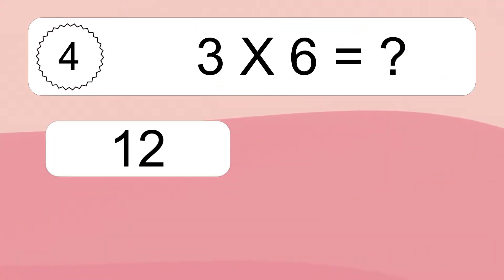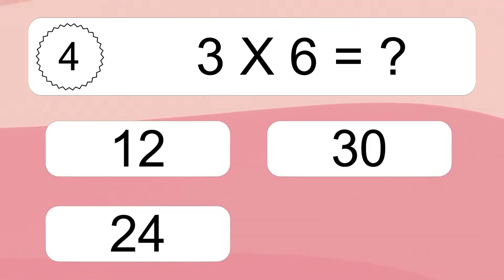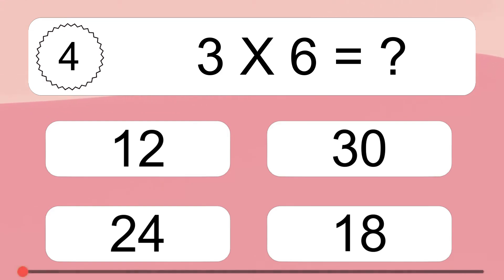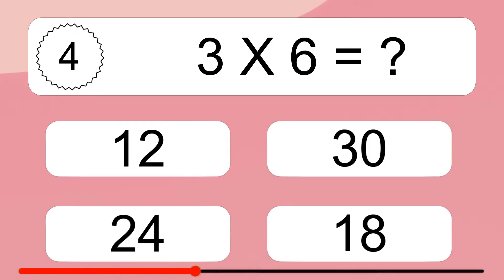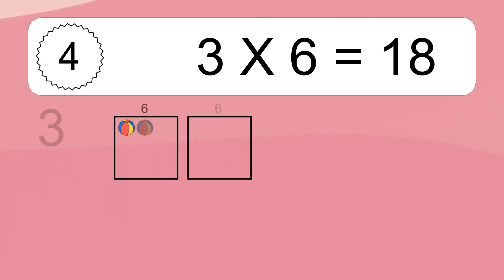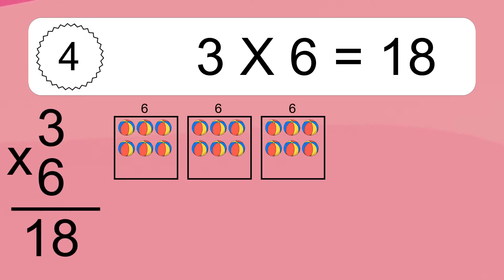Three times six equals what? Three times six equals 18.